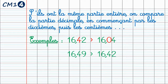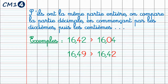Un autre exemple. Comparons les nombres décimaux 16,49 et 16,42. On constate que la partie des entiers est identique, ainsi que la partie des dixièmes. Nous allons donc comparer les centièmes. Dans le premier nombre décimal, il y a 9 centièmes. Dans le second, il y a 2 centièmes. 9 étant plus grand que 2, nous pouvons dire que 16,49 est bien plus grand que 16,42.